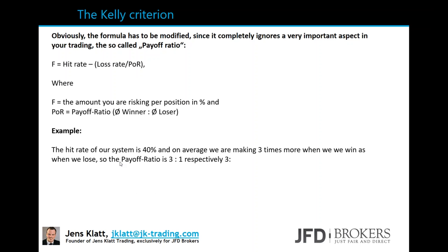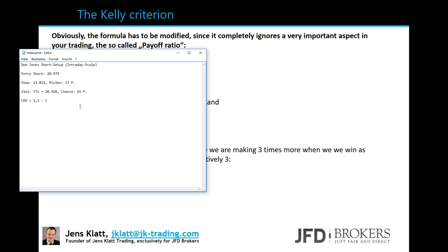The modified Kelly formula is: F = hit rate − (loss rate / payoff ratio). For example, with a hit rate of 40% and a payoff ratio of 3 — meaning the average winner is three times the average loser — and a loss rate of 60%, you get F = 0.4 − (0.6 / 3) = 0.4 − 0.2 = 0.2, so 20% risk per position. You can now see where that 20% number was coming from earlier.